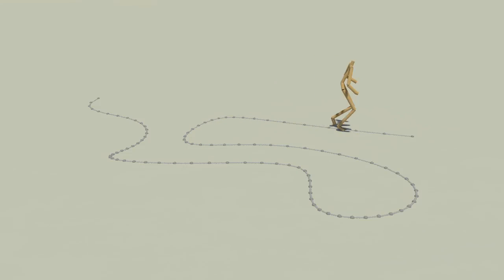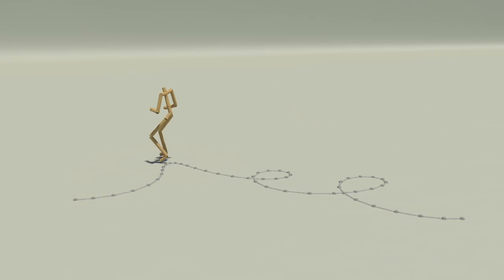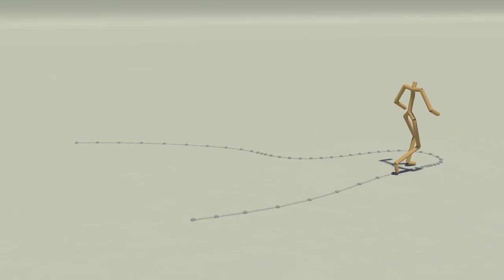By making the character face sideways, we can naturally produce side-stepping motion. And by varying the velocity, we can introduce transitions.